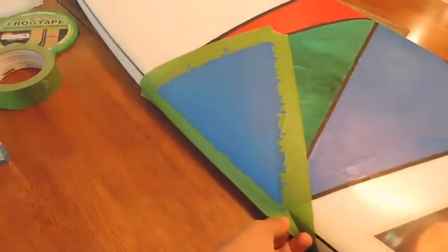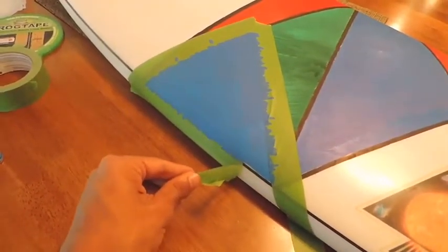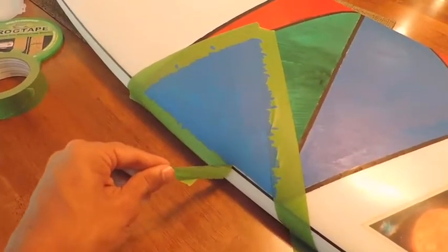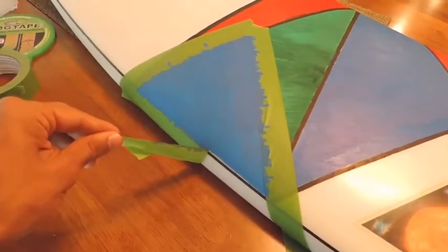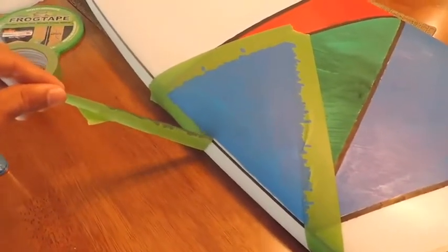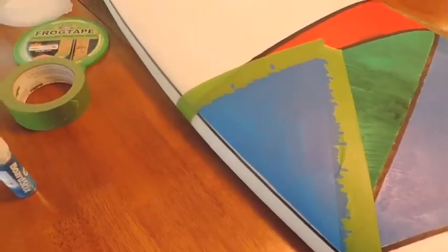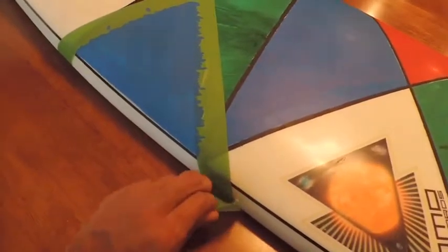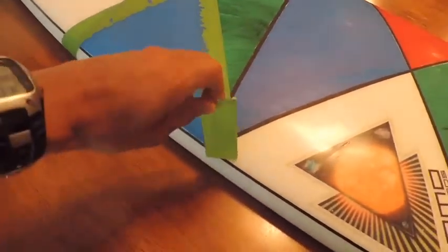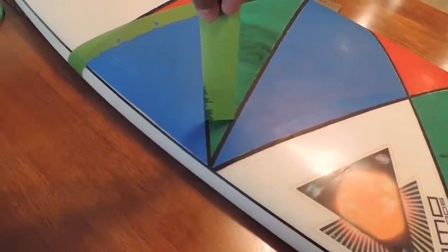Grab a corner and just lightly pull. Should come off fairly easily. And it looks like, perfect. So you can see that first line coming out great. Go ahead and get this second one up. And you just want to be sure to pull your tape straight up. You don't want to smear any colors.